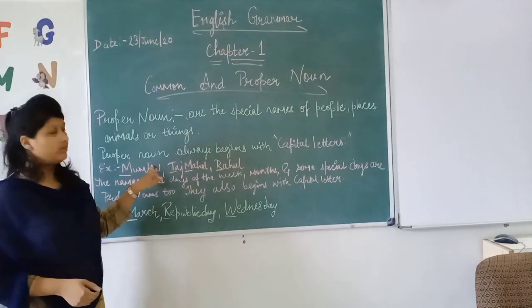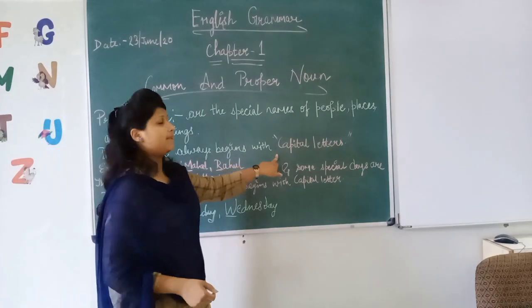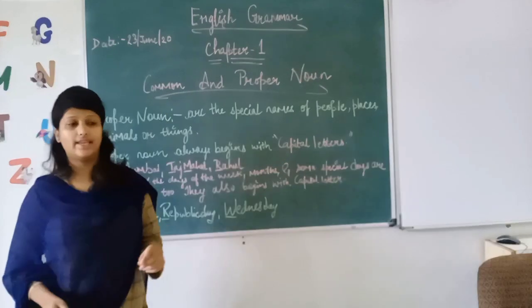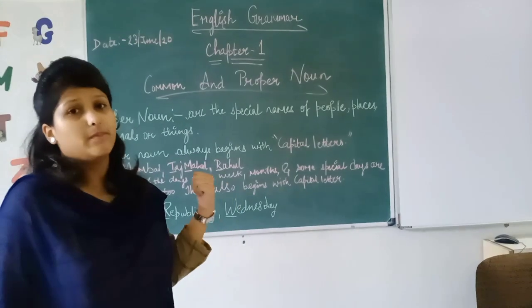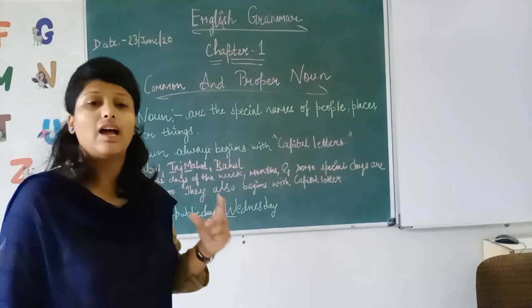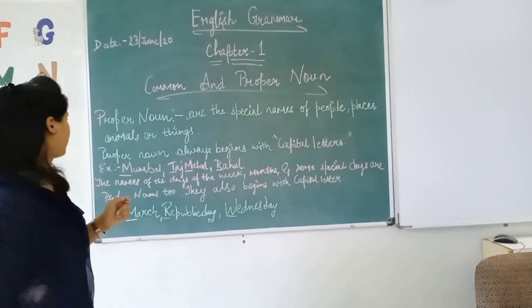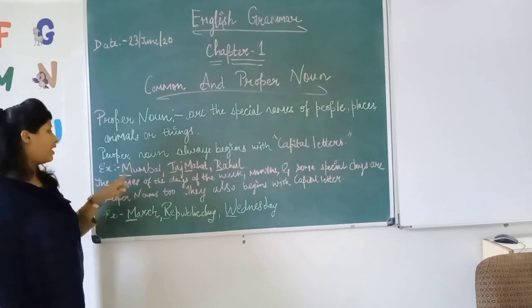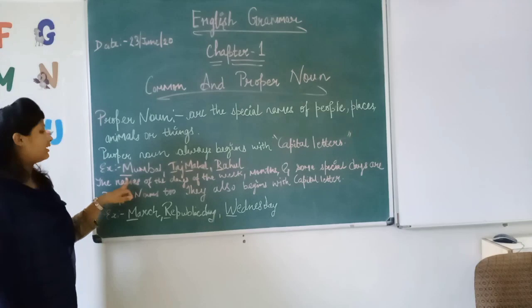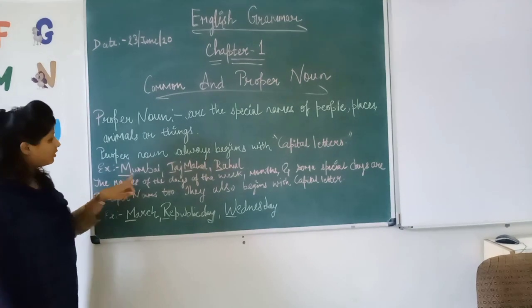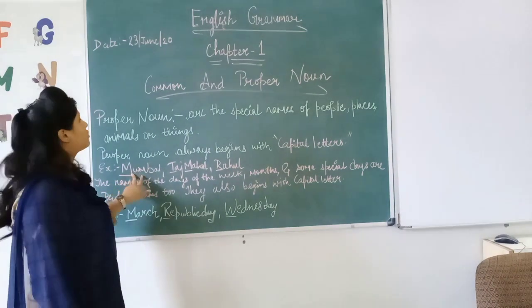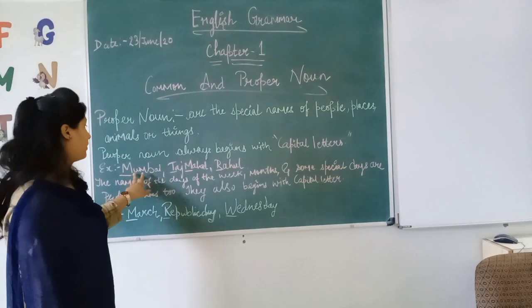Proper nouns always begin with a capital letter. That means the name of a person, place, animal, or thing in a proper noun always begins with a capital letter. For example, Mumbai — here M is written in capital letter. The word Mumbai is the name of a city, so Mumbai is a proper noun.